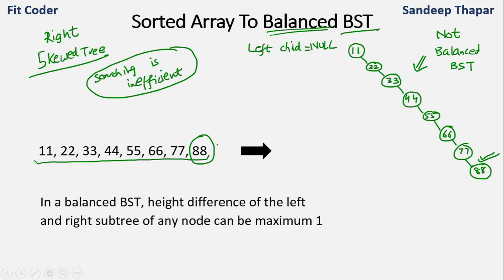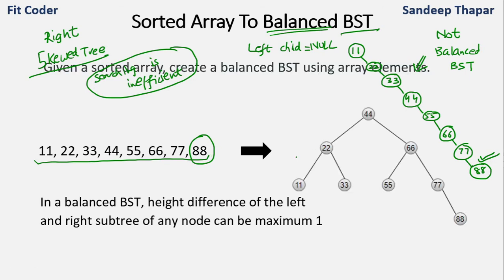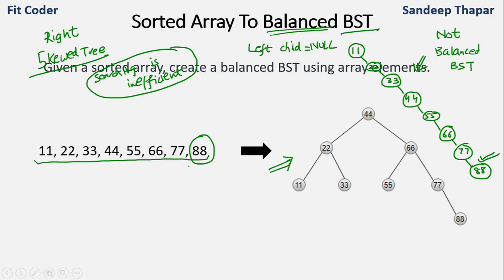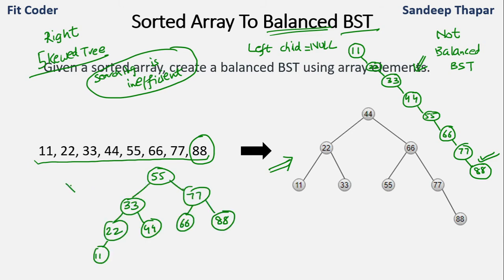A balanced binary tree will look something like this — this is just one of the BSTs that is balanced. We can have many others; there are many balanced BSTs possible from these array elements. Our task is to create a balanced BST given any set of sorted array elements.